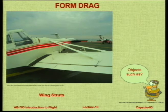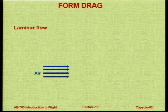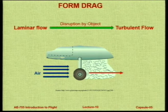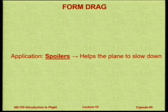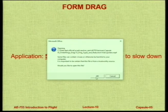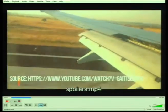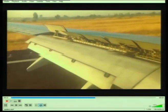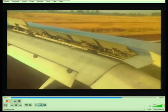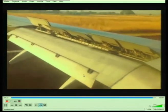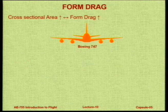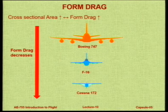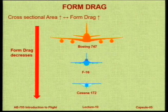Form drag can also be caused by disruption of flow — a protruding rivet or any object causes turbulence. Spoilers — which come up just after landing — create extremely high parasite drag intentionally: at that point we do not want lift, we want to spoil or kill the lift. So you project surfaces almost perpendicular to the airstream. As cross-sectional area increases, form drag increases; from the 747 to the F-16 to the Cessna 172, there is a reduction in cross-sectional area, so lower form drag.